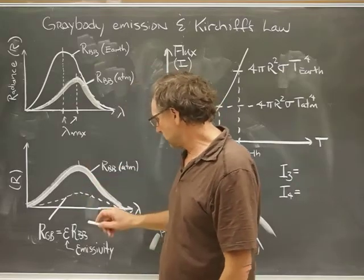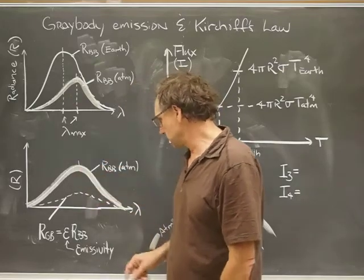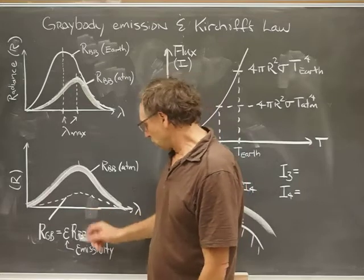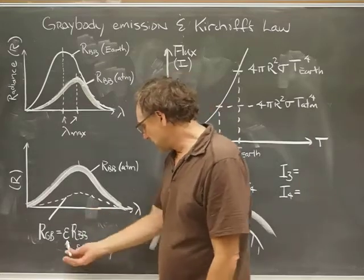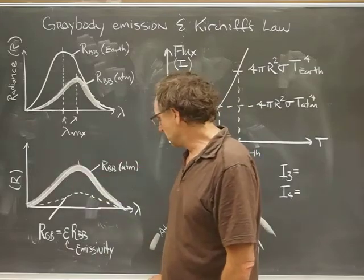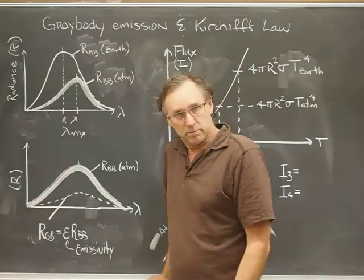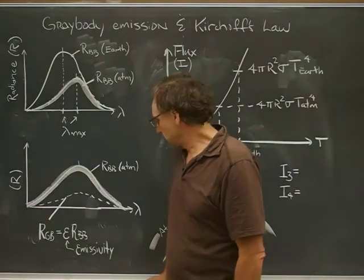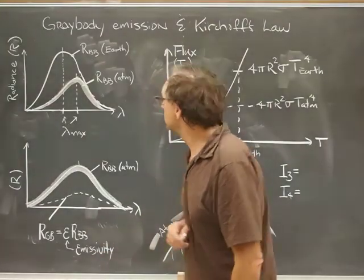And now this dash curve here, I've just multiplied this by, say, 0.4, or whatever the emissivity is. Because that's that constant factor smaller than one that lowers the radiance that comes off the atmosphere because the atmosphere is not completely opaque. So that's the emissivity.